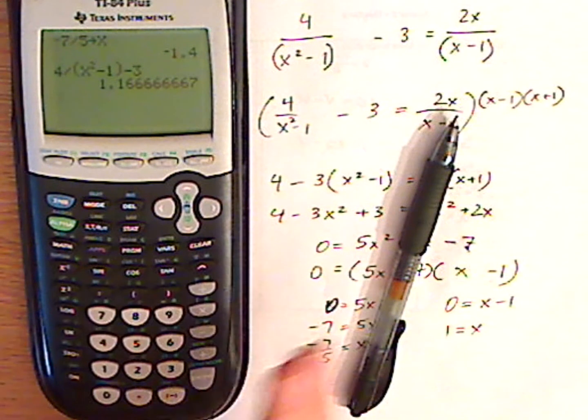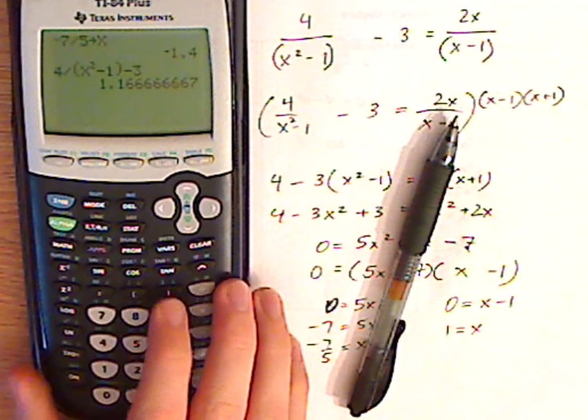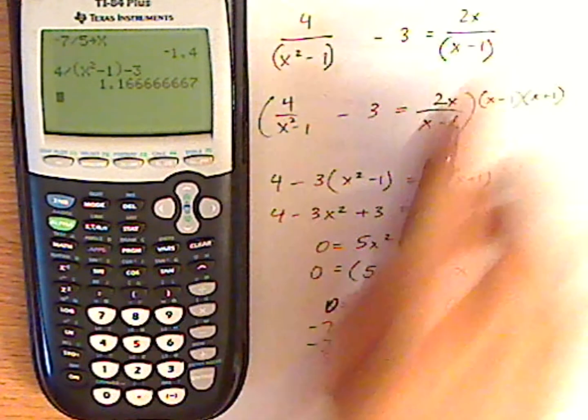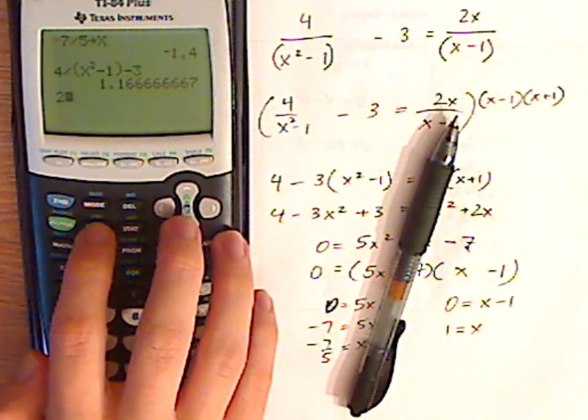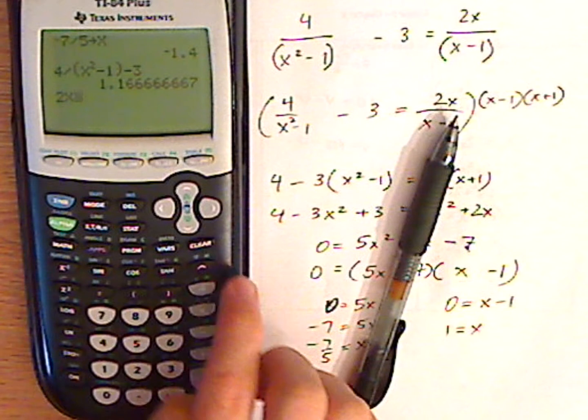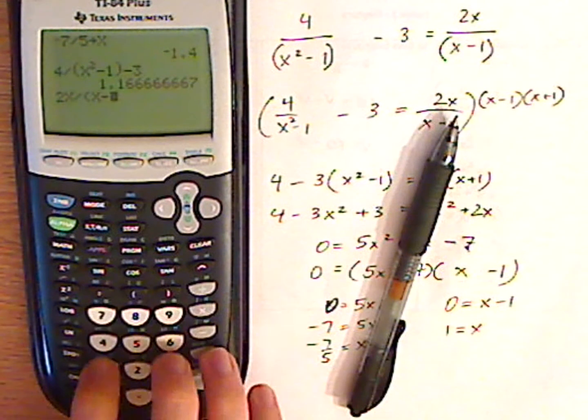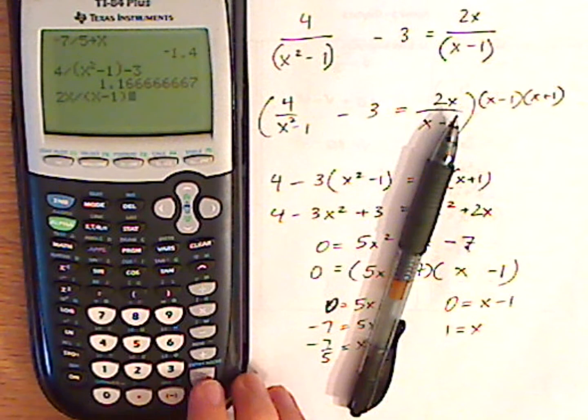All right, so I get something like that, and then just type in the other side. So two x divided by parentheses, x minus one, close parentheses.